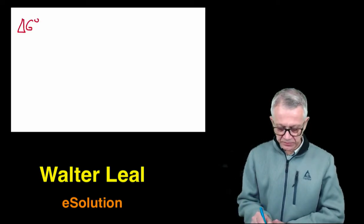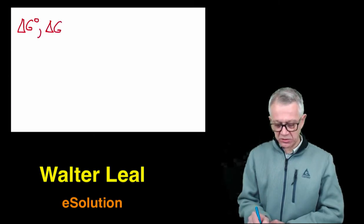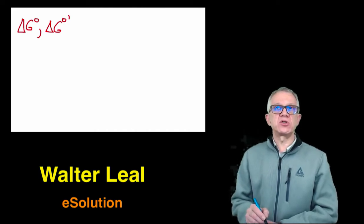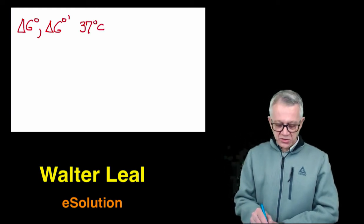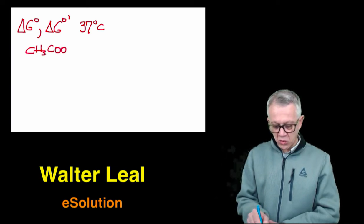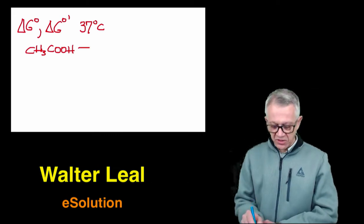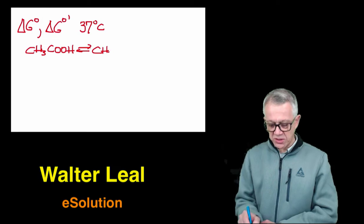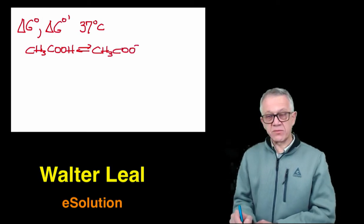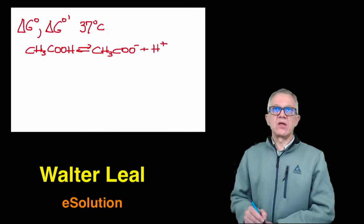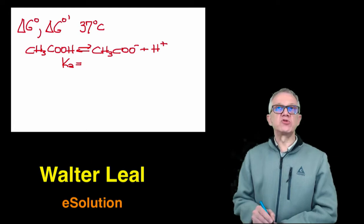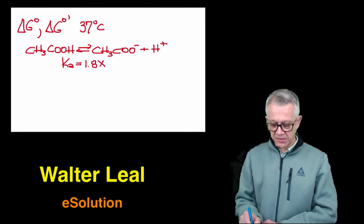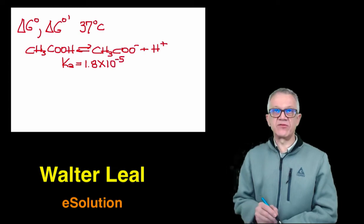Let's calculate the ΔG° and ΔG°' for the ionization of acetic acid at 37°C, body temperature. Acetic acid is CH₃COOH, and it dissociates to give off a proton: CH₃COOH → CH₃COO⁻ + H⁺. The equilibrium constant for this reaction is also known as Ka, and its value is 1.8 × 10⁻⁵.